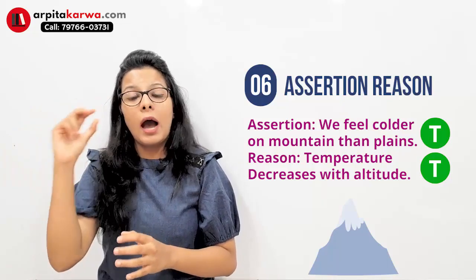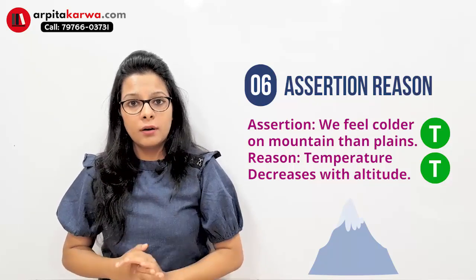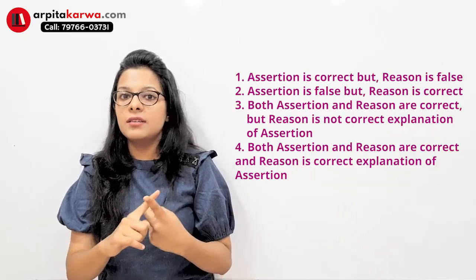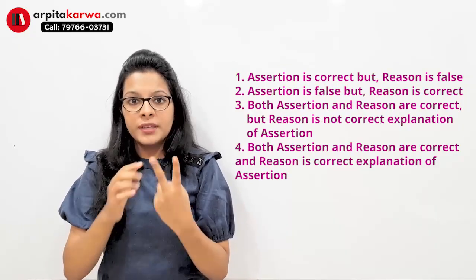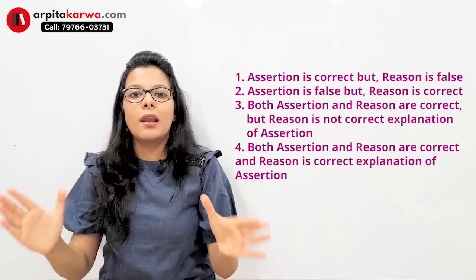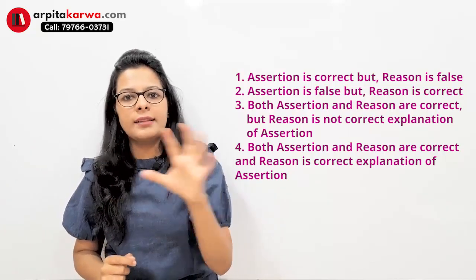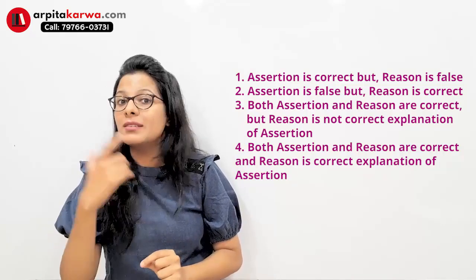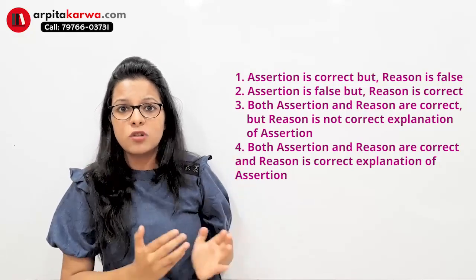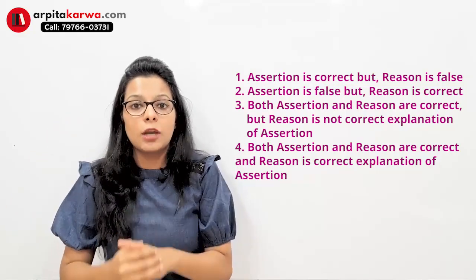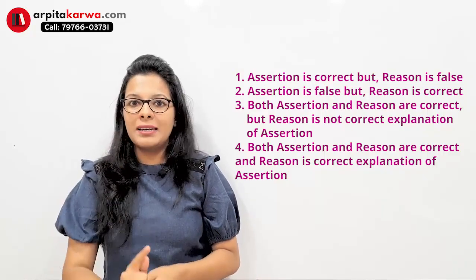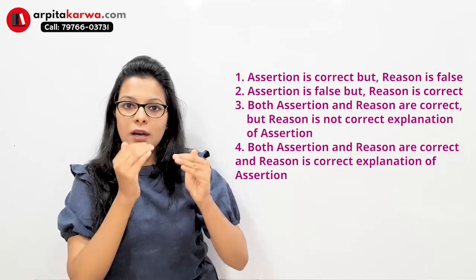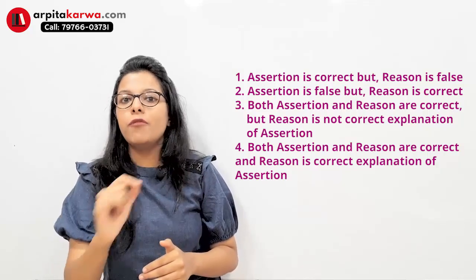Once you have evaluated both statements, look at your options. Sometimes an assertion statement is wrong or a reason statement is wrong — in that case, your options will be either 'assertion is true but reason is false' or 'assertion is false but reason is true.' If both statements are true, you move to the third or fourth option: either 'assertion and reason are both true but reason is not a correct explanation of assertion,' or 'assertion and reason are both true and reason is a correct explanation of assertion.'